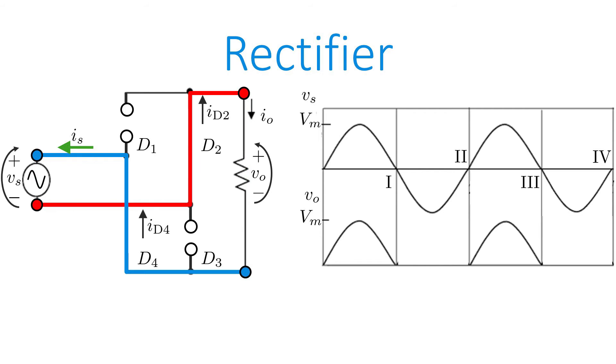Notice that the direction of the arrows are different in this case. The direction of the input arrow goes from the node highlighted in red to the node highlighted in blue, whereas the direction of the output arrow goes from the node highlighted in blue to the node highlighted in red. This means that the output voltage has the same magnitude, but opposite sign to that of the input voltage.